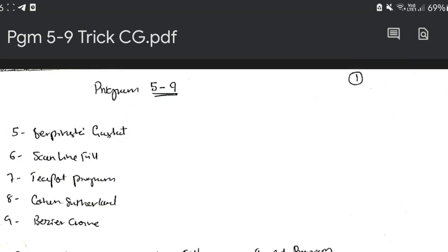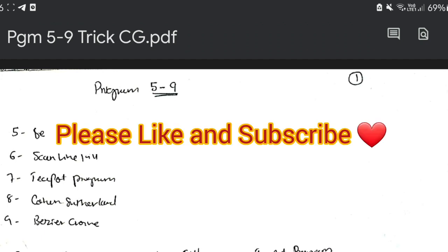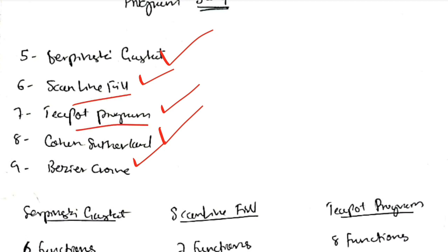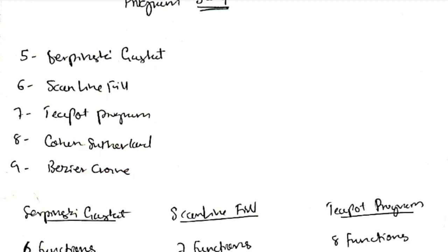Hello everyone. Today in this video we will be discussing programs 5 to 9 — how to memorize them, what is the trick, and what are the patterns. The programs 5 to 9 are: 5 as Sierpinski Gasket, 6 as Scanline Fill Algorithm, 7 as Teapot Program, 8 as Cohen-Sutherland, and 9 as Bezier Curve. You have to remember them in this order.